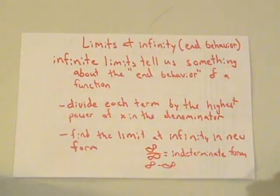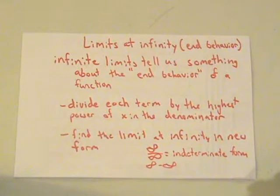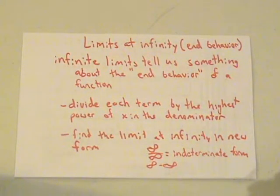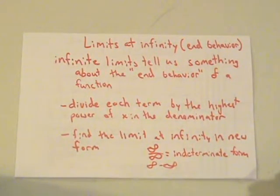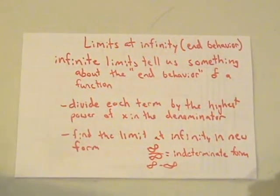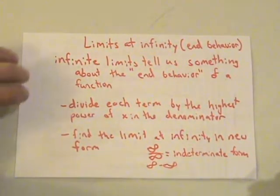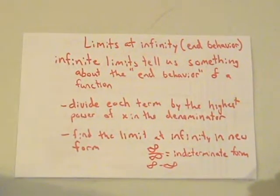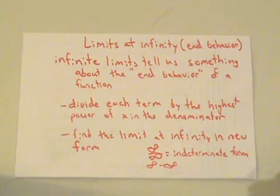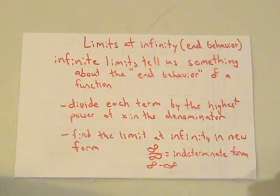Hi, I will be talking about limits at infinity and it will show us the end behavior. This is section 5. Infinite limits tell us something about the end behavior of a function. Usually when we're dealing with infinite limits we're dealing with rational functions. A guideline we can follow is to divide each term — everything in the function — by the highest power of x in the denominator. With that we can find the new limit which will give us a new form.